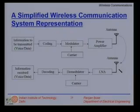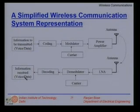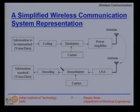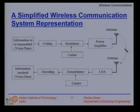At the receiver side, we amplify it, demodulate it, decode it, and recover the transmitted data. This is a simplified version. As we will see along the course, we can have not a single transmitting antenna but several transmitting and receiving antennas — a multiple-input multiple-output system.